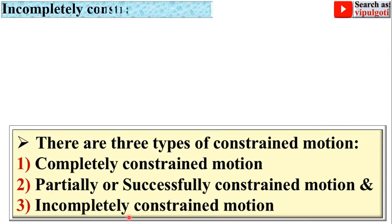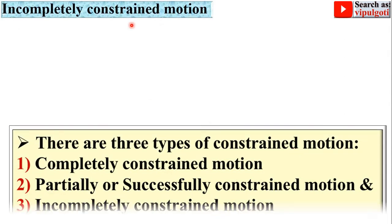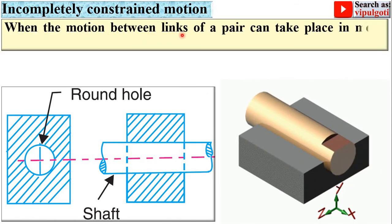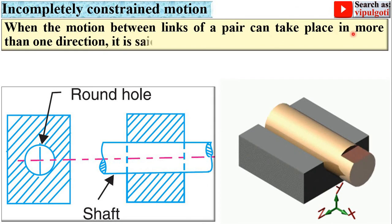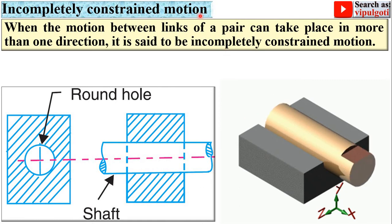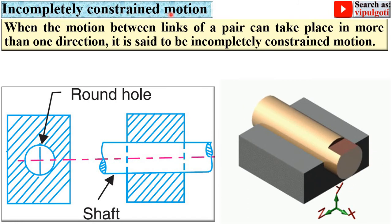Next, the third type: incompletely constrained motion. When the motion between links of a pair can take place in more than one direction, it is said to be incompletely constrained motion. Here you can see one translatory motion and one rotational motion, meaning two degrees of freedom. In short, if the degree of freedom is more than 1, it is called incompletely constrained motion.